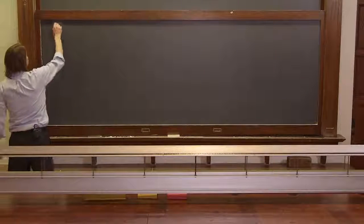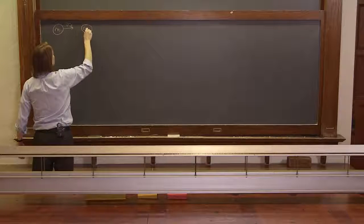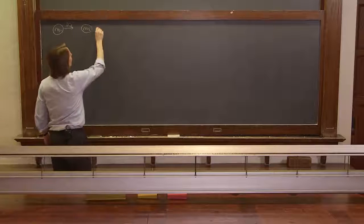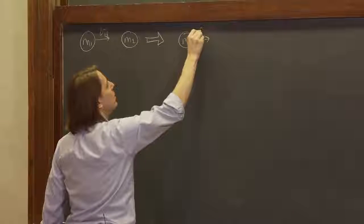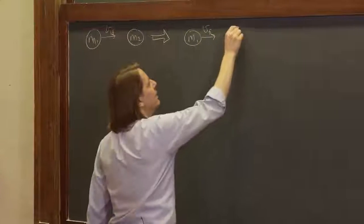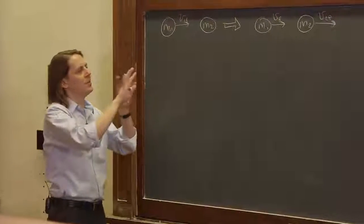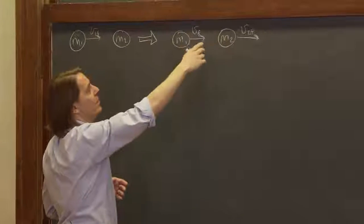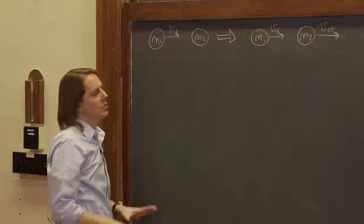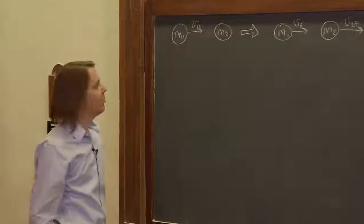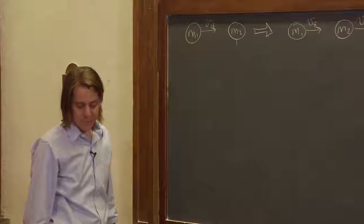Before we continue, let's remember what we had. Here's m1, and it was moving at v1 initial toward m2, and m2 was stationary. Then there's going to be a collision. After that collision, m1 might be moving at some speed v1f and m2 might be moving at some speed v2f. The drawing is not meant to imply they'll both always move forward — you plug in values and calculate. If v1f comes out negative, it went the other way. We're doing a special case where m2 is stationary, so v2 initial is zero.